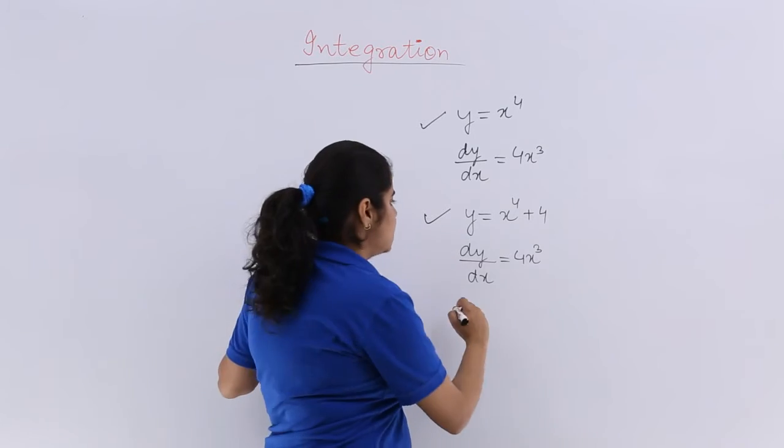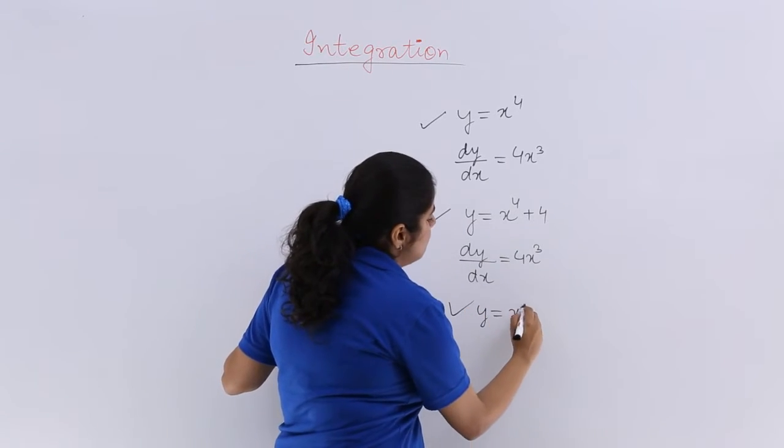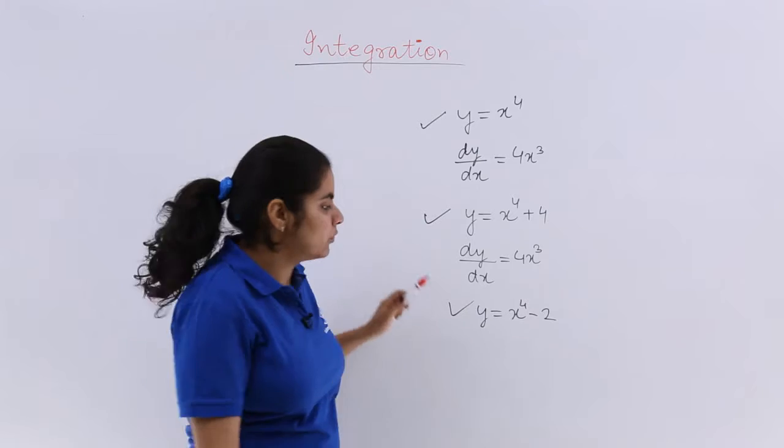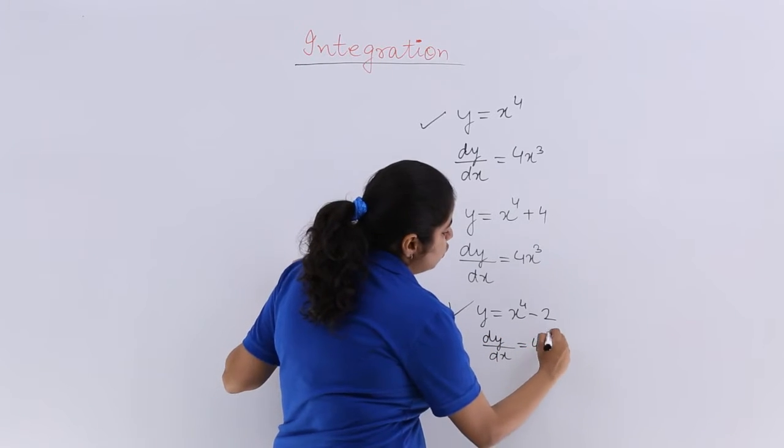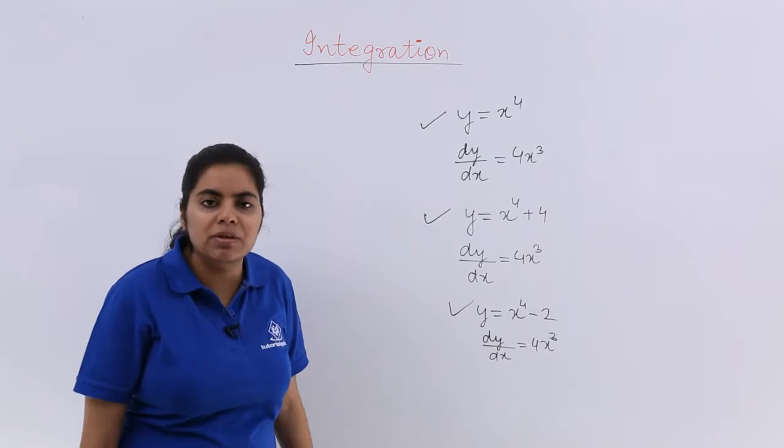Next again one example, let's see. I have my y is equal to x^4 minus 2. What is my dy by dx? That is equal to 4x cube.